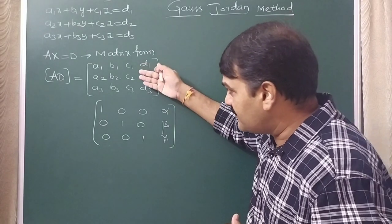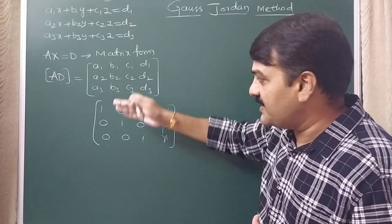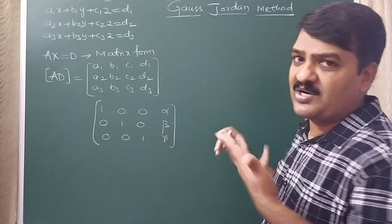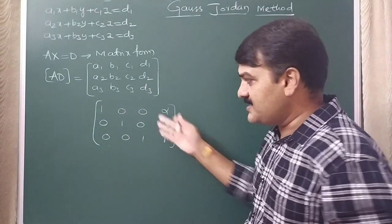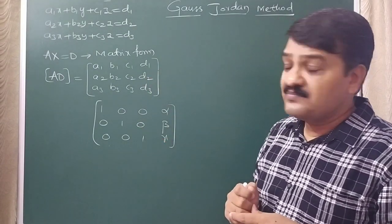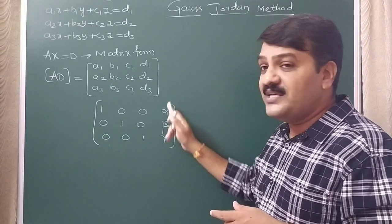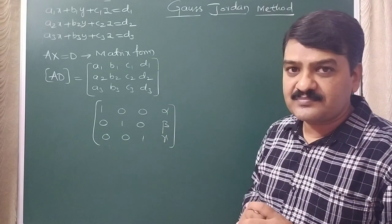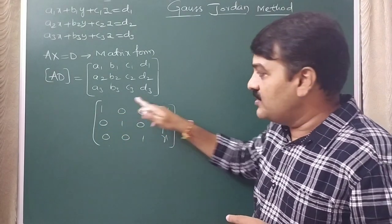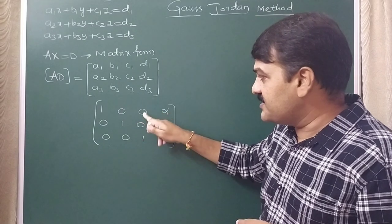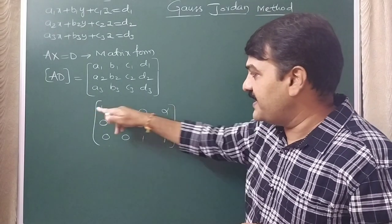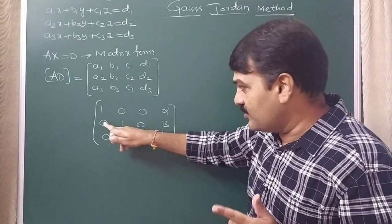We have to transform the augmented matrix into this model, which is called the echelon form. Once you transform into this model, directly by looking at the last column you can write the solution. The equation formed from the first row is: 1·x + 0·y + 0·z = α, so from the first row we get x = α.